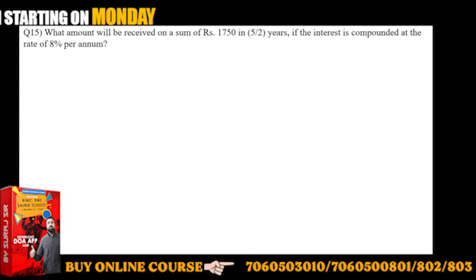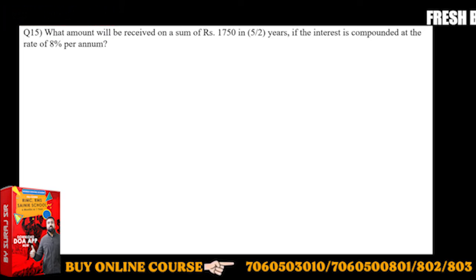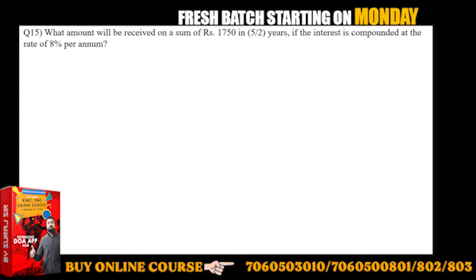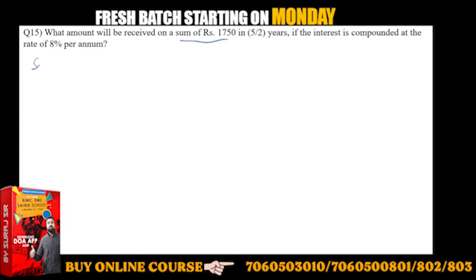Question number 15: What amount will be received on a sum of Rs. 1750 in 5/2 years, meaning two and a half years? What amount will be received after compounding on this sum of money?